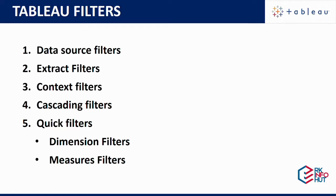Hi friends, welcome to my channel ERK InfoVet. Today I am going to talk about filters. Filters are five types: Data Source Filter, Extract Filter, Context Filter, Cascading Filter, and Quick Filters. Quick Filters have two varieties: Dimension and Measure. Each filter is detailed in this video.